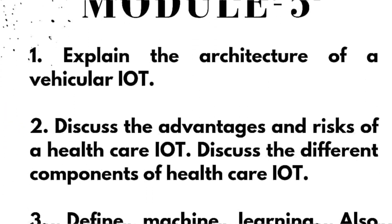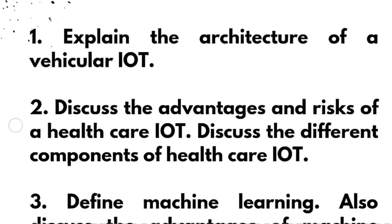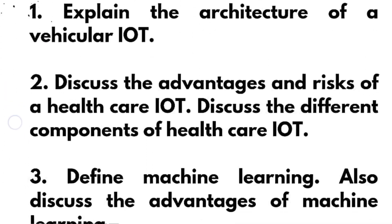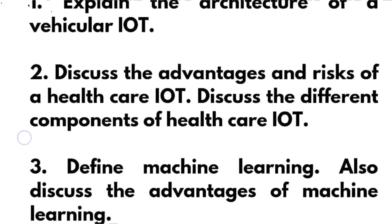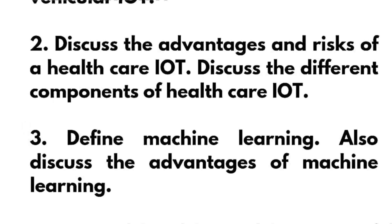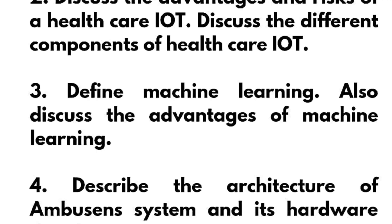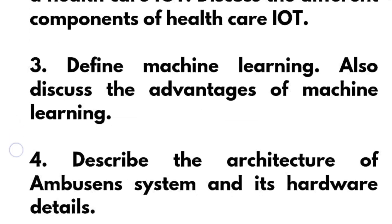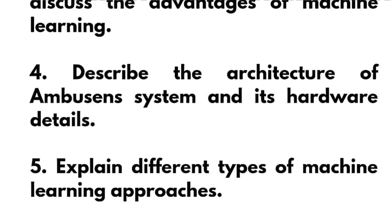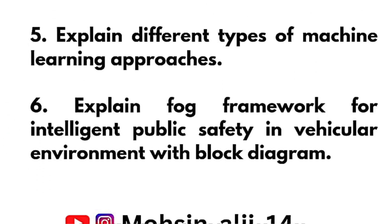In Module 5: explain the architecture of a vehicular IoT; discuss the advantages and risks of a healthcare IoT and its different components; define machine learning and discuss its advantages; and describe the architecture of the Ambassador system and its hardware details.